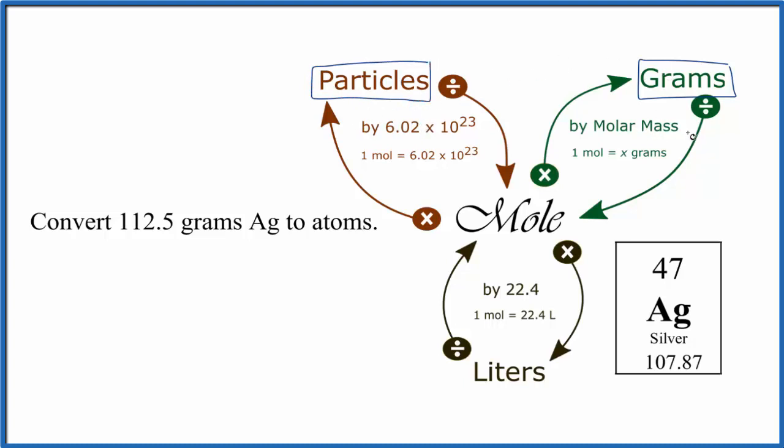We can't go there directly. What we need to do is divide by the molar mass of Ag, silver. That gets us to moles. From moles, we can multiply by Avogadro's number, and that'll get us atoms, the particles we're talking about.